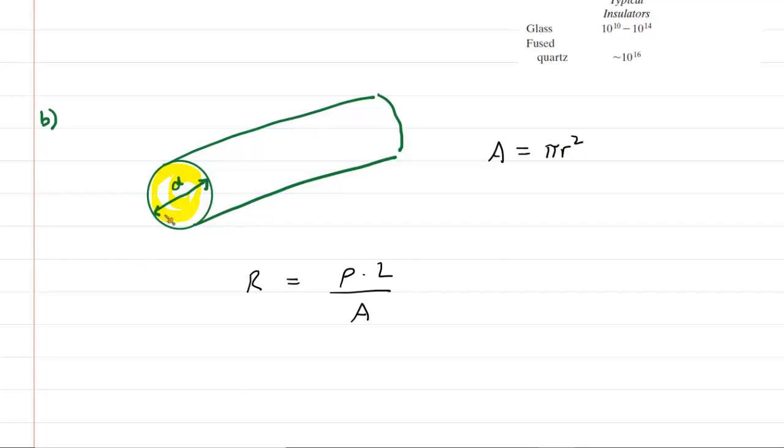But this question wants us to find the diameter. So it would be useful to express the area in terms of diameter. Now, of course, we also know that the radius of a circle is equal to its diameter divided by 2. So we will come in here and we will change the radius into d over 2. And then we'll square it. We can simplify this a little bit. It would become pi times d squared over 4. So this expression here will be substituted for the cross-sectional area of the copper rod.